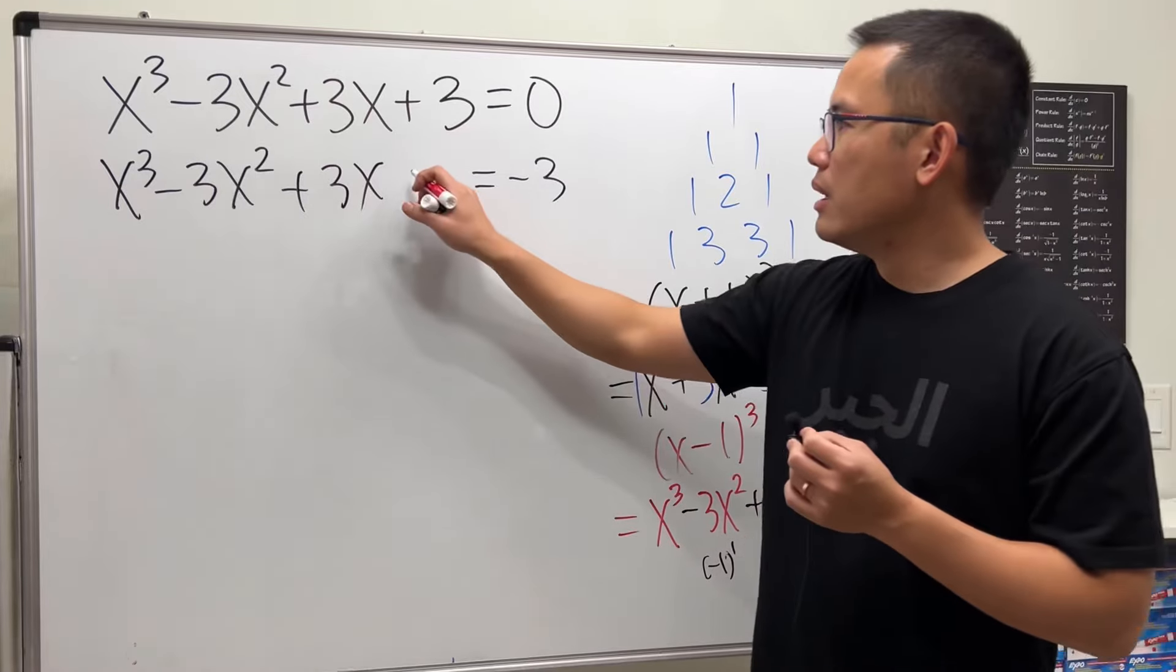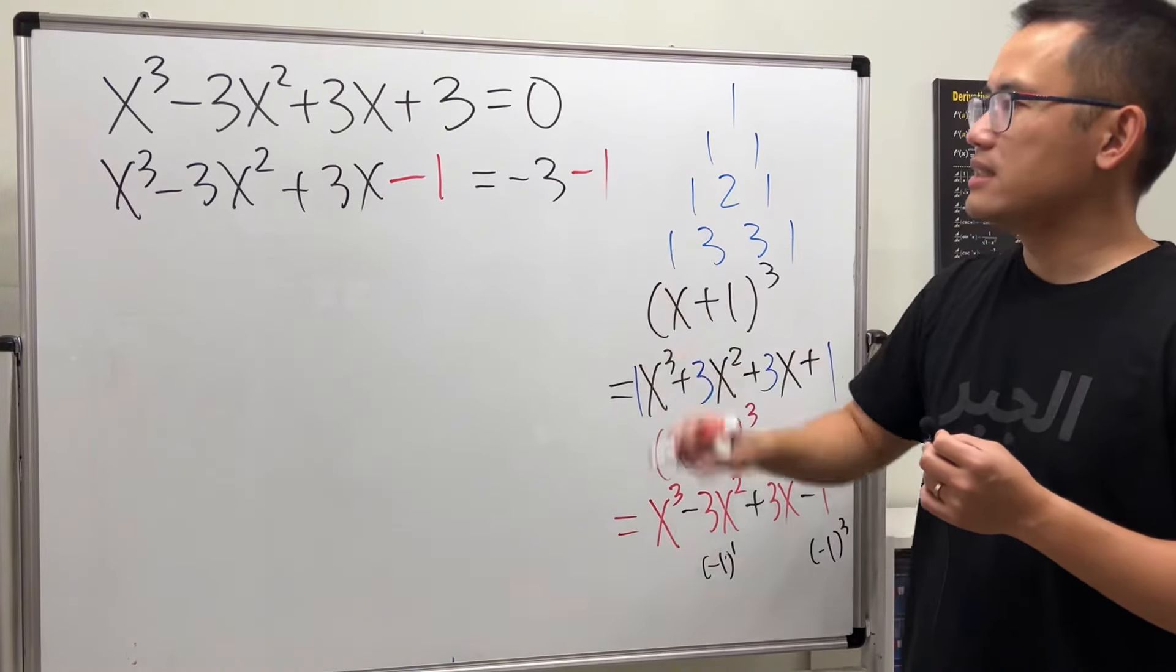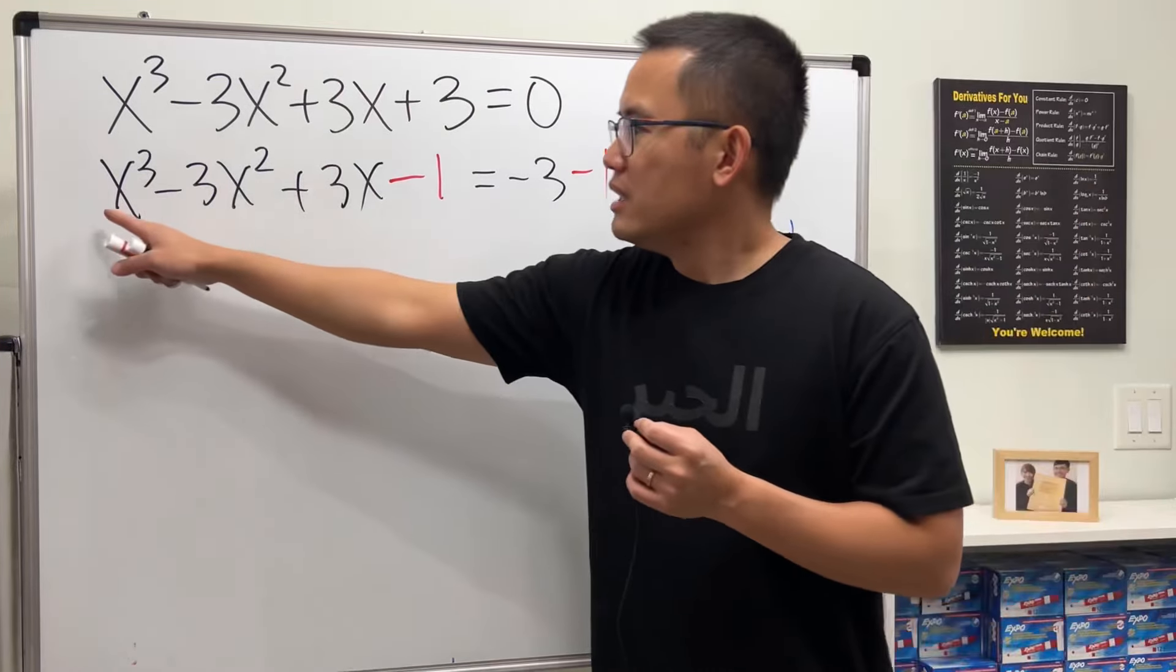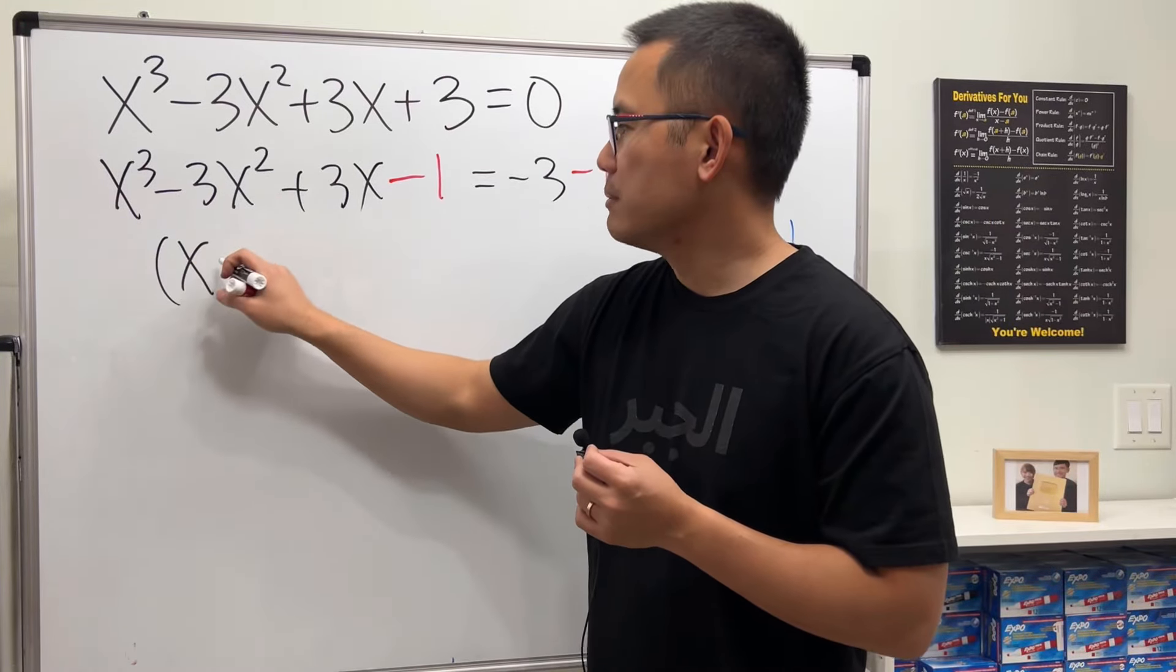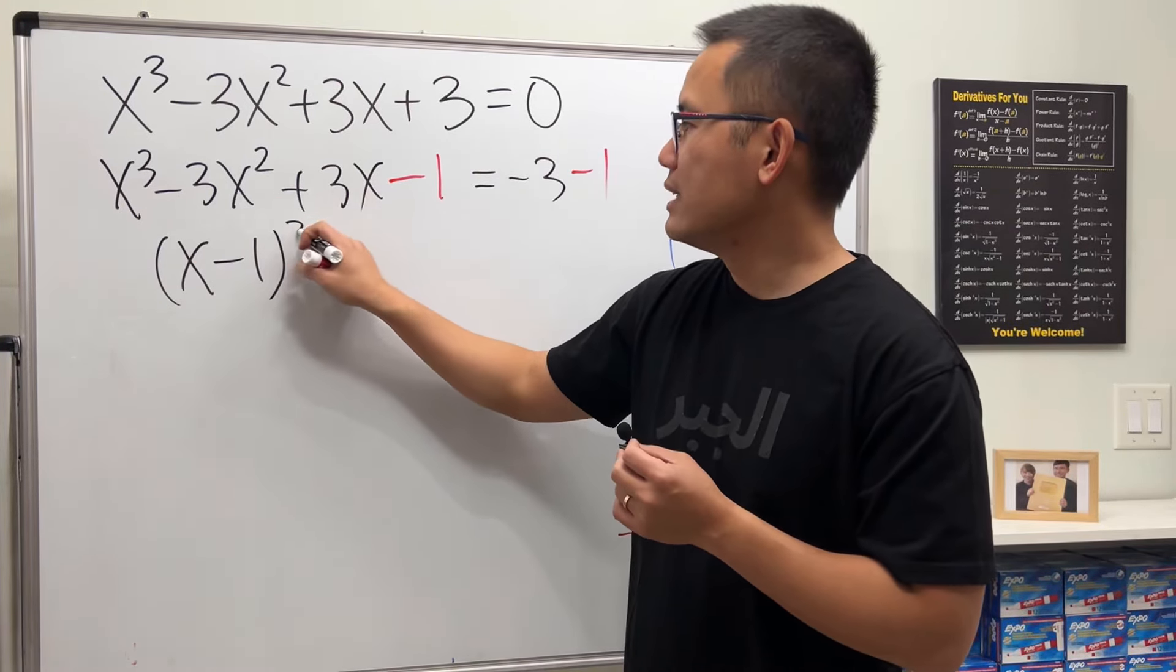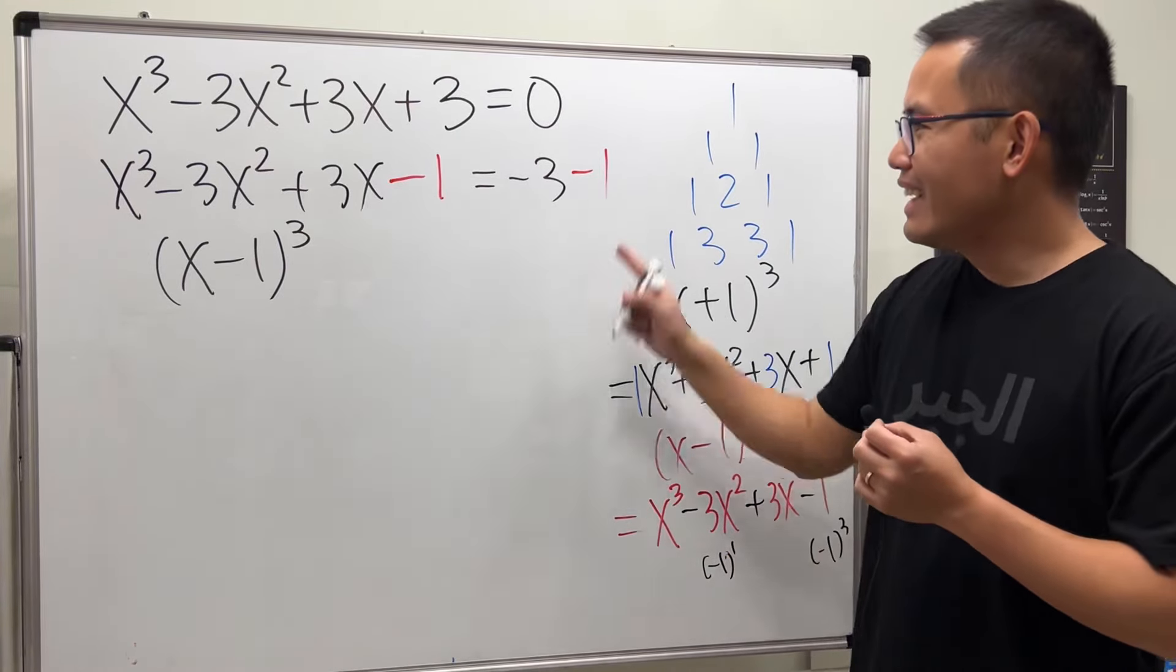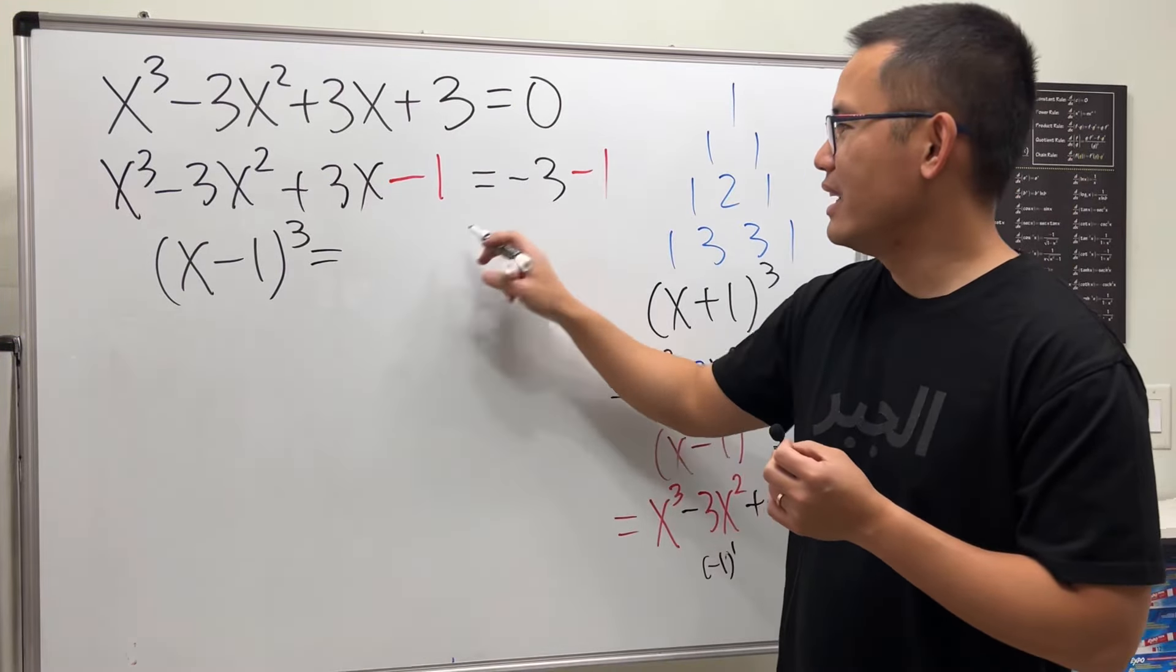What's the number that we want here? Negative 1. Minus 1 from both sides, this way the left hand side gives us just (x-1)³ and the right hand side gives us -4.